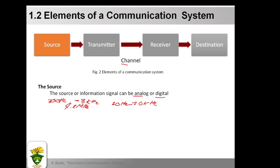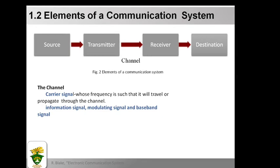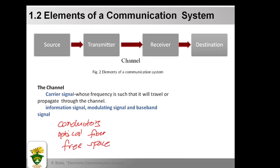A channel can be almost anything — it can be a pair of conductors, an optical fiber, or free space. Most of the time in our examples and exercises, we will be considering free space as a channel. Sometimes a channel can carry the information signal directly; for example, an audio signal can be carried directly by a twisted pair telephone cable. On the other hand, a radio link is used in free space.